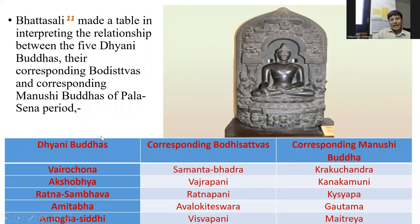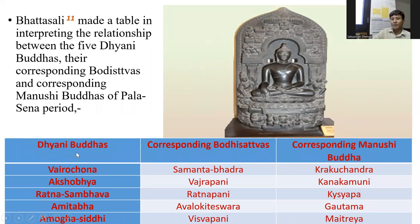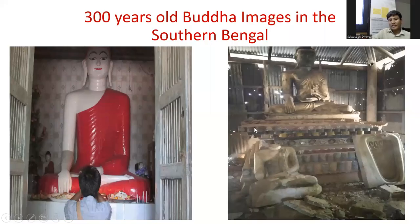During the Pala period in Bengal, the tradition of five Dhyani Buddhas came into existence: Vairochana, Akshobhya, Ratnasambhava, Amitabha, and Amoghasiddhi. This five-Buddha tradition began to flourish in Bengal. Nalini Kanta Bhattasali gave an account of these five Dhyani Buddhas. This example in the present Bangladesh National Museum is one of the five Dhyani Buddhas.